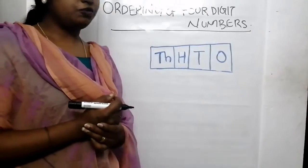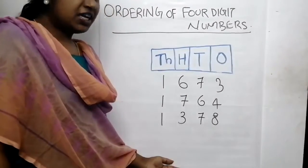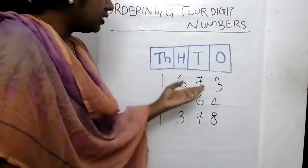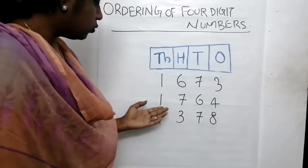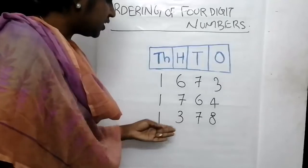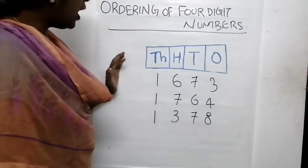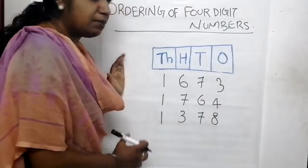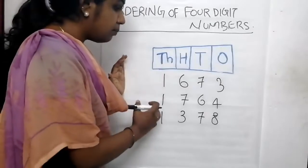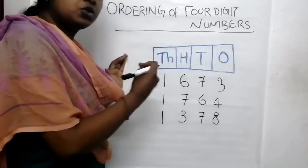Let's take another set of numbers. We have three numbers. Read these numbers with me: 1,673. 1,764. 1,378. Then we have to compare these numbers and find which number is smallest, and arrange these numbers in the order of their size - that is from smallest to largest.